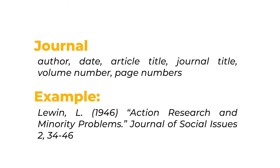For a journal article, the sequence is: author, date, article title, journal title, volume number, and page number. An example is shown here.